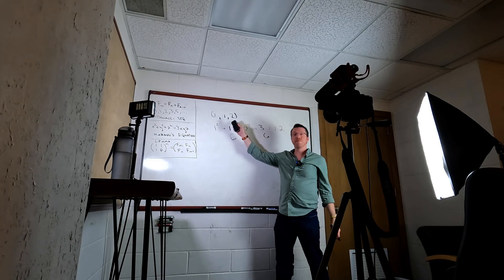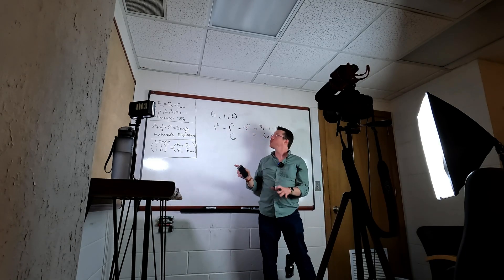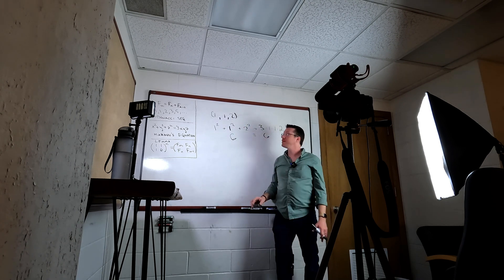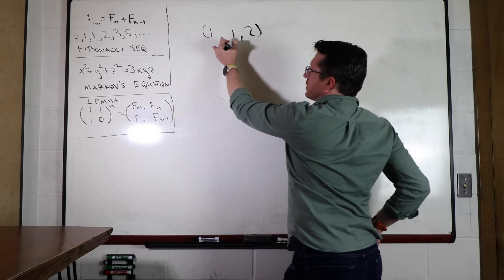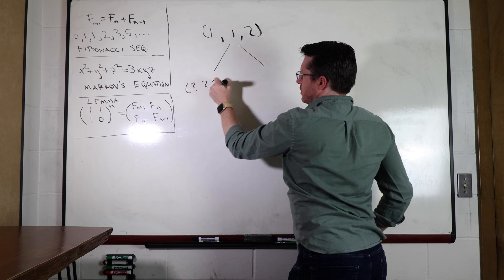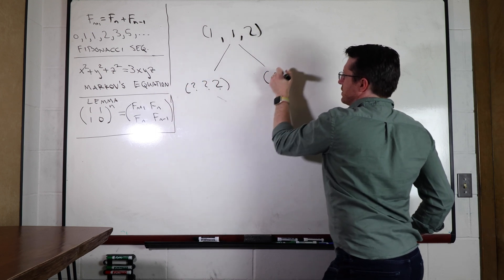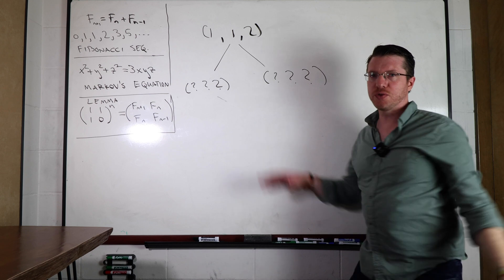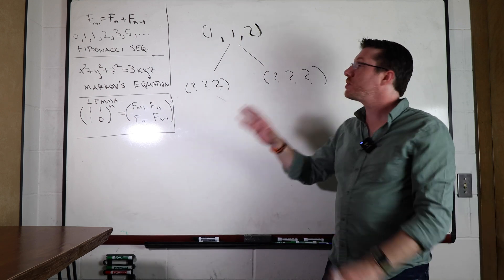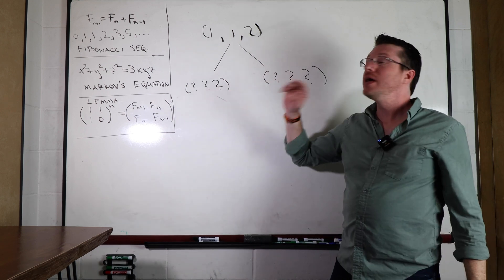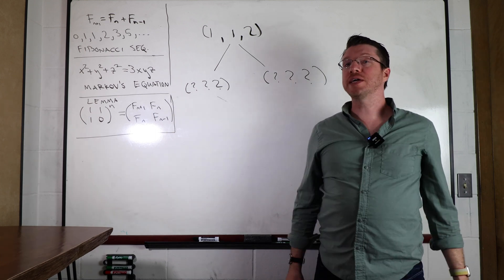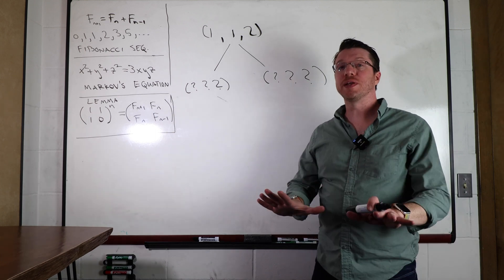Michael Penn gave a methodology where you can start with this base solution and generate new solutions — building a tree of solutions. I want to tell you how to get one branch of that tree, and that is the branch involving the Fibonacci sequence.